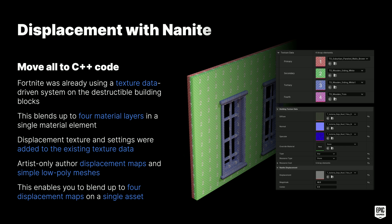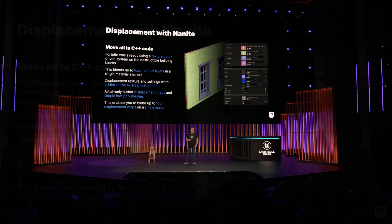We moved all of this to C++ code. Fortnite already uses a texture data-driven system for all our destructible buildings, which lets us blend up to four texture sets on a single asset in a single material element. All we did was use this texture data asset and add another slot for displacement maps, a magnitude value, and a center bias offset. This allowed our artists to only create low-poly meshes and displacement maps, and then procedurally generate in-editor all the high-detail meshes using up to four displacement maps on a single asset.